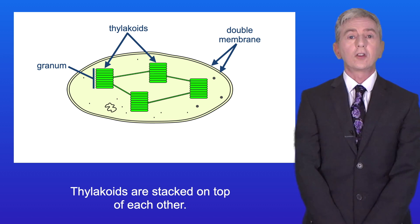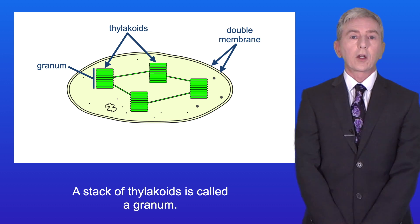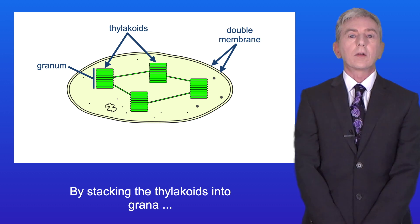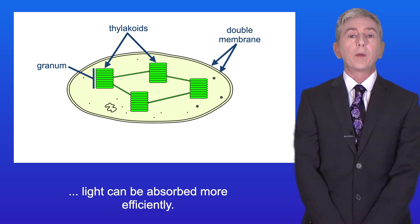Thylakoids are stacked on top of each other, and a stack of thylakoids is called a granum. By stacking the thylakoids into grana, light can be absorbed more efficiently.